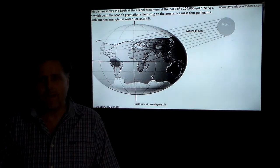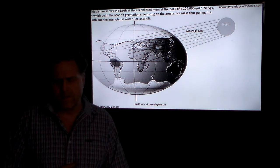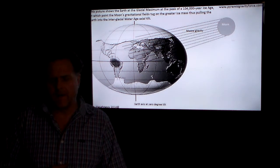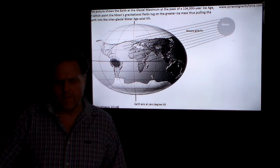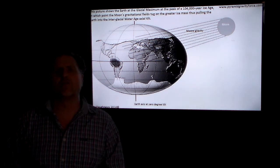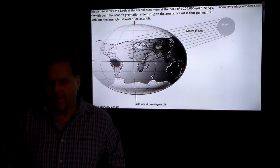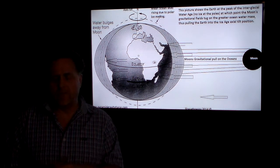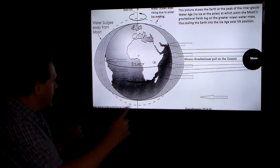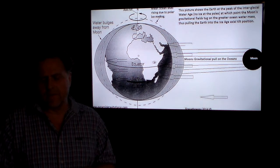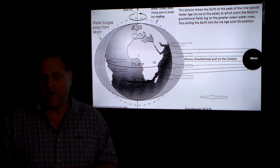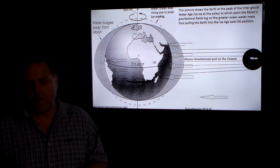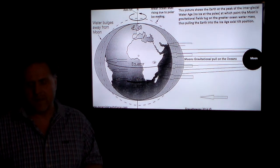Just throwing you some graphics out there. Here's another graphic I made. This picture shows the Earth at the glacial maximum at the peak of the 104,000-year ice age, at which point the Moon's gravitational field tug on the greater ice mass, thus pulling the Earth into the interglacial water age axial tilt that we're currently at, 23 and a half. This picture shows the Earth at the peak of the interglacial water age, which we're nearing right now, and no ice at the poles, at which point the Moon's gravitational field tug on the greater ocean water mass, thus pulling the Earth into ice age axial tilt position.